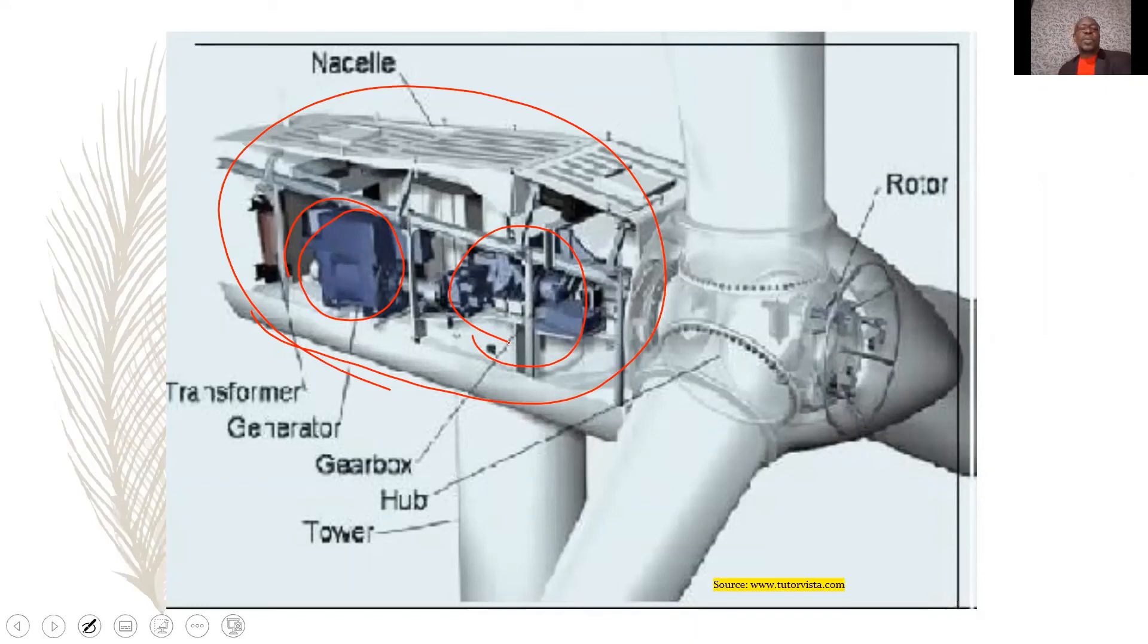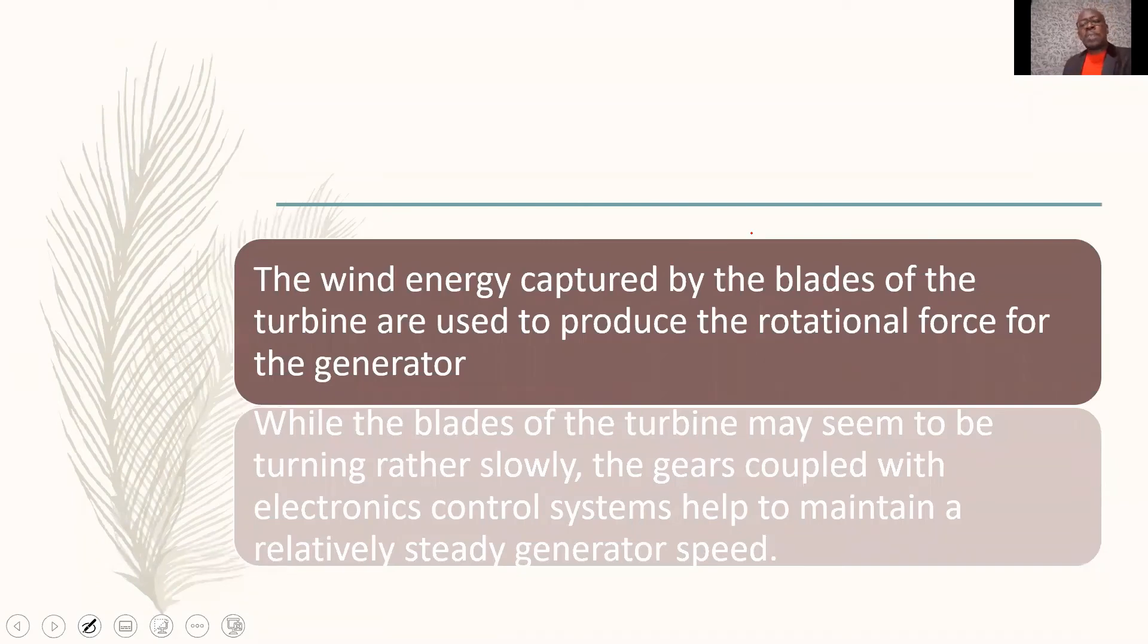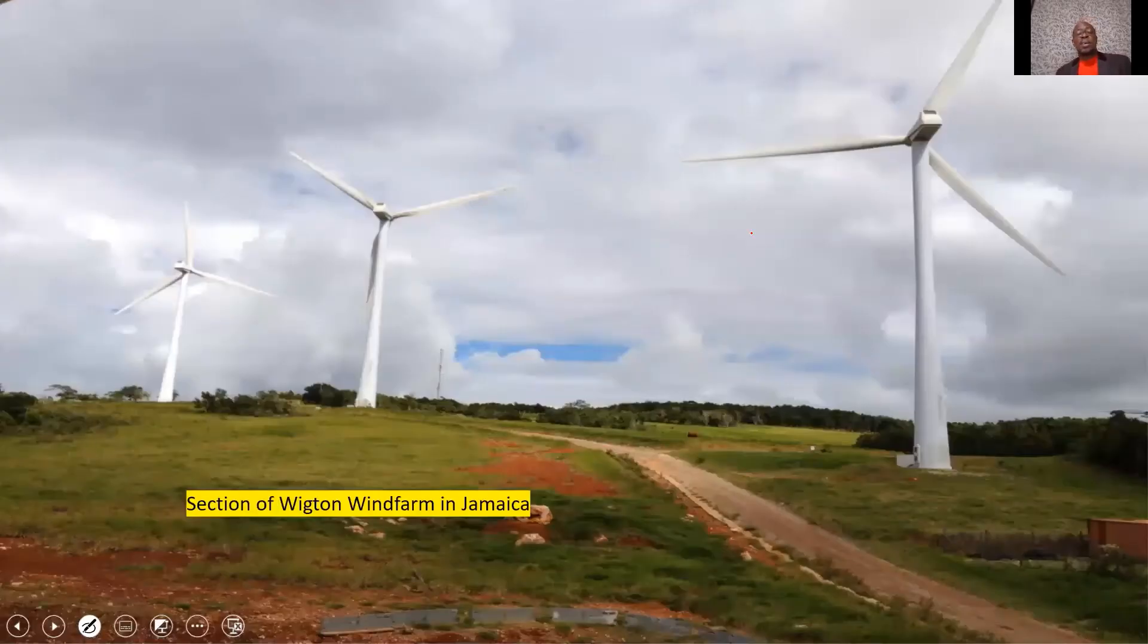Which manages the speed that goes from the blades to the generator. So, the wind energy is captured by the blades of the turbine. And that produces the rotational force to the input, to the generator. And one of the things I want to mention here is that sometimes the blades seem to be turning rather slowly. But the gears coupled with electronics control provides a steady rotation to our generator.